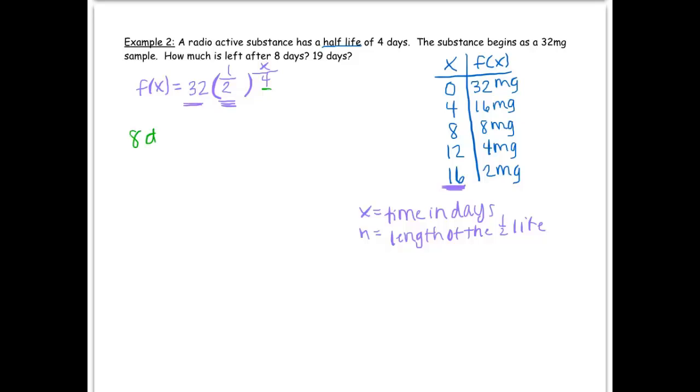Does that make sense? Because after 16 total days, my substance only gets cut in half four times. So, of course, this 4 here is going to change based on the information given to you in the problem. So, let's see how many is left after 8 days. Now, we've had that in the table. After 8 days, there's 8 milligrams. But if I do out f of 8, I get 32 times 1 half to the 8 over 4, which means I get 32 times 1 half squared, which is 32 times 1 fourth, which is 8. So after 8 days, there's 8 milligrams of the substance.